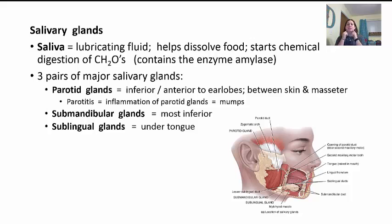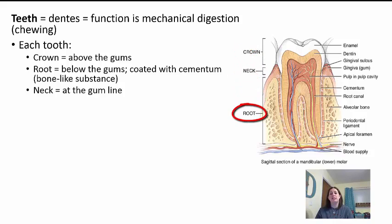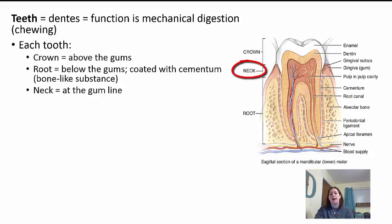The most inferior group are the submandibular glands — below your mandible. You also have your sublingual glands right underneath your tongue. Teeth are also a big part of helping with digestion in the mouth, called the dentes — this is why you see a dentist for your teeth. They function in mechanical digestion through chewing. Each tooth has a crown above the gum line, a root below the gum line coated in cementum to help hold it in place, and a neck which holds the crown to the root right at the gum line.